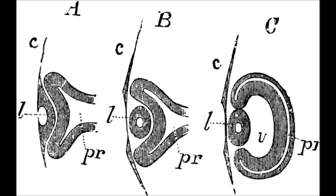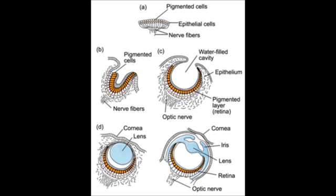From this pair of diverticula, formed from the sides of the forebrain and the mesodermal and ectodermal structures in contact with it, the two eyes develop. After it meets the surface ectoderm, the primary optic vesicle invaginates to form the optic cup.